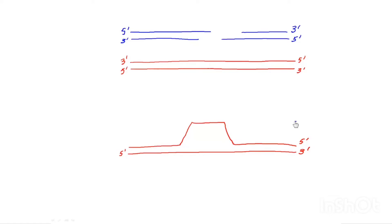So here is the protruding, over here is the protruding 3' overhang.